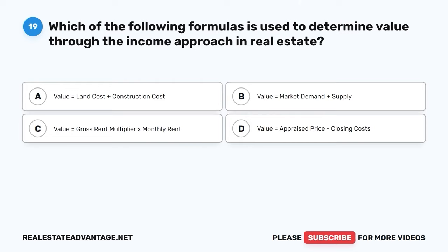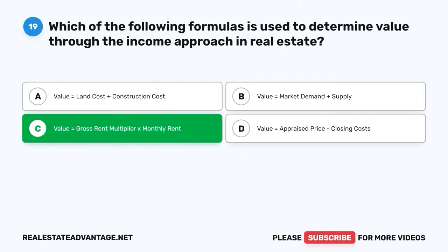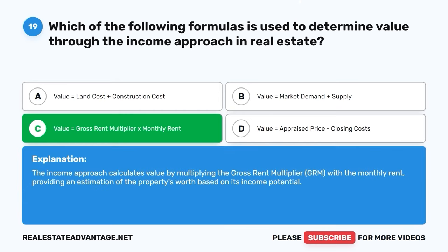Question 19. Which of the following formulas is used to determine value through the income approach in real estate? A. Value = land cost + construction cost. B. Value = market demand + supply. C. Value = gross rent multiplier × monthly rent. D. Value = appraised price − closing costs. The correct answer is C: Value = gross rent multiplier × monthly rent. The income approach calculates value by multiplying the gross rent multiplier (GRM) with the monthly rent, providing an estimation of the property's worth based on its income potential.